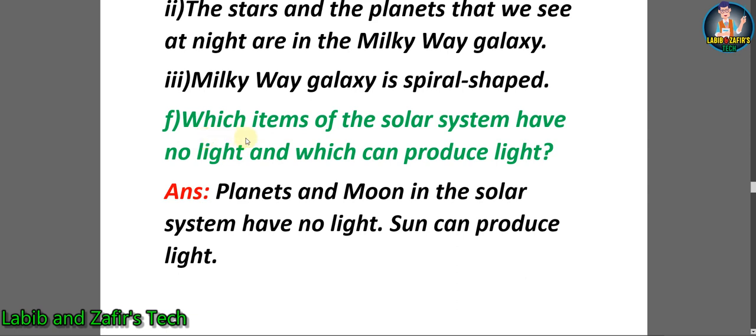Number 5: Which items of the Solar System have no light and which can produce light? Answer: Planets and Moon in the Solar System have no light. Sun can produce light.